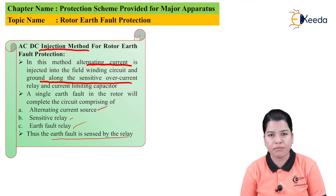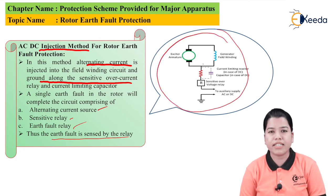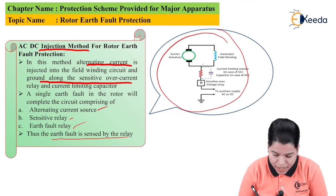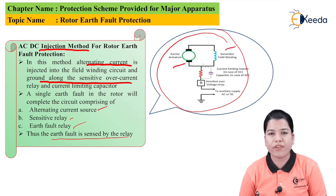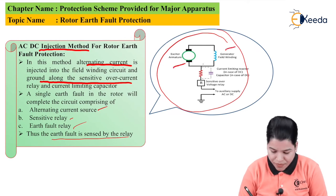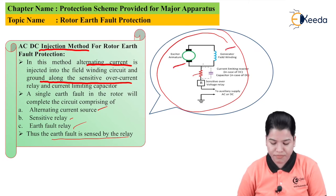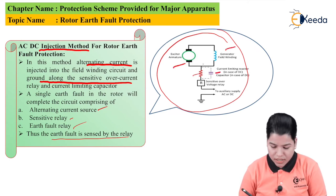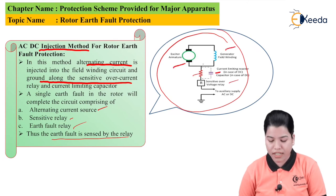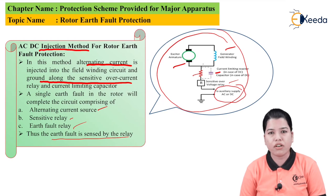Let us see this in the diagram. This is the total arrangement for the AC injection method. Here we have the exciter armature, then the generator field winding into which the AC current is fed. There is one resistor to provide the path for the flow of fault current, then one current limiting reactor — that is, a capacitor — is connected. Here we have a sensitive overvoltage relay, and an auxiliary supply which can be AC or DC.